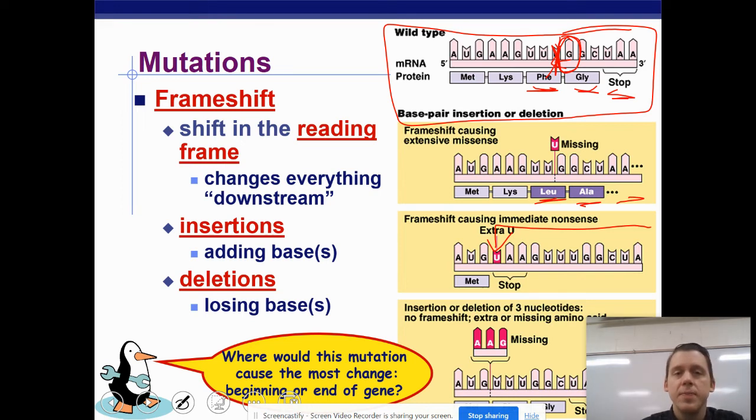So insertions, adding one in, shifting everything over to the right. Deletions, losing one, shifting everything over to the left. So frameshift mutations ruin everything past that point. So where would this mutation cause the most change, the beginning or the end of a gene? The answer is the beginning. The beginning would change everything after that point. So that would be a really bad thing to have one of these mutations at the beginning of a gene.